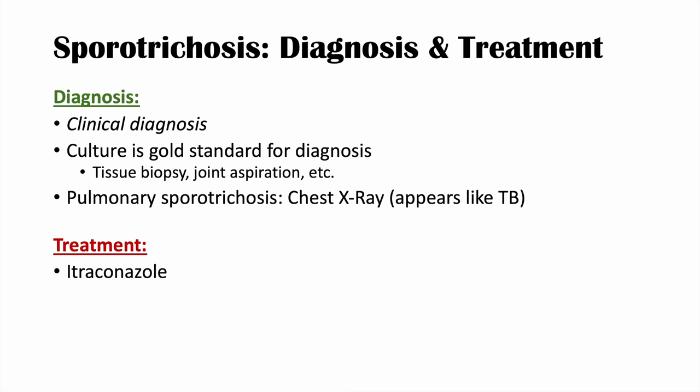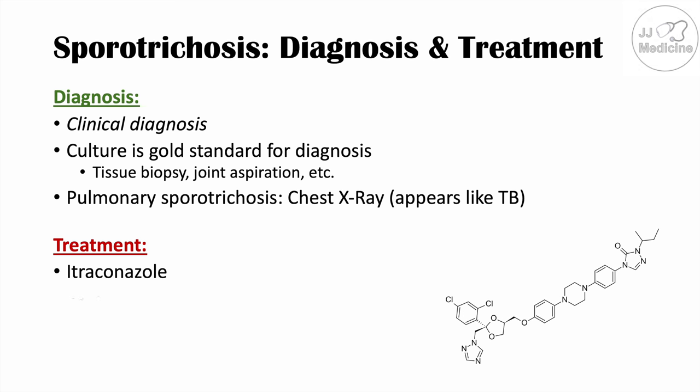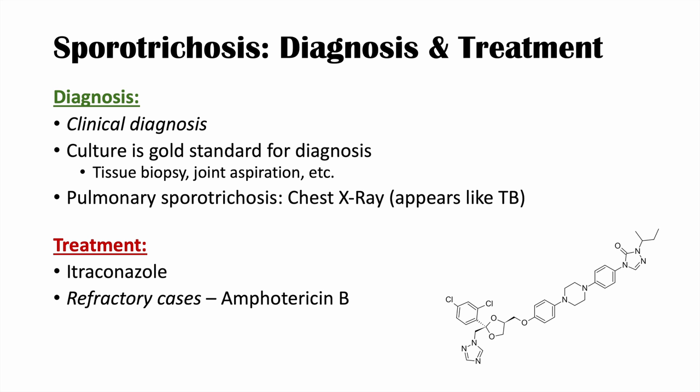Treatment of sporotrichosis uses antifungals. Itraconazole is typically the first treatment used. If the case is refractory and itraconazole doesn't work, IV amphotericin B is used — the big gun in the antifungal world. For disseminated cases, intravenous amphotericin B is also used.